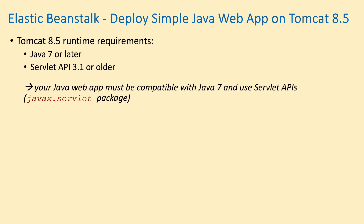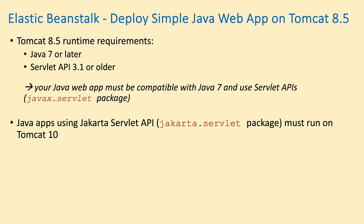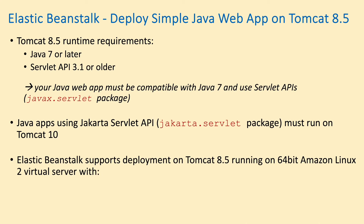That means your Java web application must be compatible with Java 7 or newer and use Servlet APIs — the code that uses the javax.servlet package. Java applications using Jakarta Servlet API, that is code using the jakarta.servlet package, must run on Tomcat version 10. Elastic Beanstalk supports deployment on Tomcat 8.5 running on 64-bit Amazon Linux 2 with either Corretto 8 / Java 8 or Corretto 11 / Java 11.